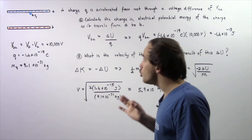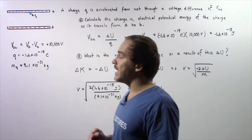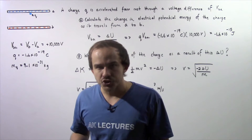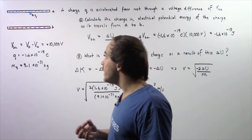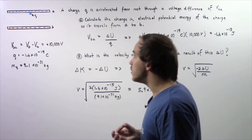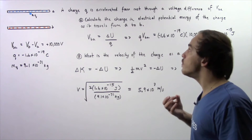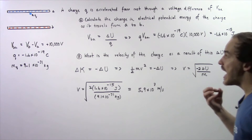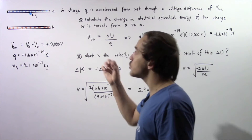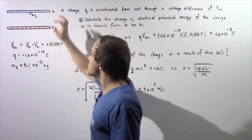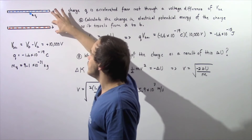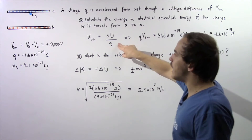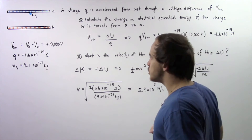it is losing electric potential energy and it is gaining kinetic energy. So we essentially want to calculate how much electric potential energy our charge will lose when it travels from A to B. To do this we have to use the following equation.